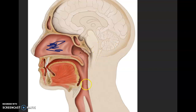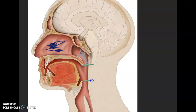Then we have the pharynx back here — it actually has three parts. From here to there is called the nasopharynx. From here to here is the oropharynx. And then lastly, from here to here is the laryngopharynx. Don't worry, I will spell that for you.